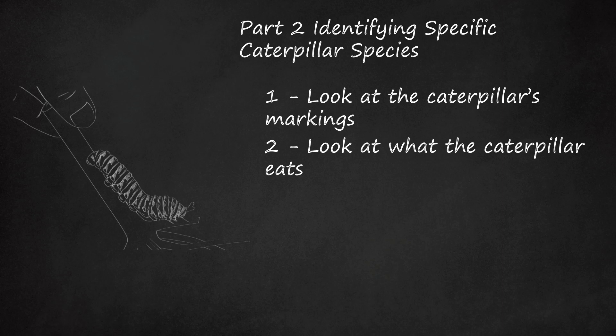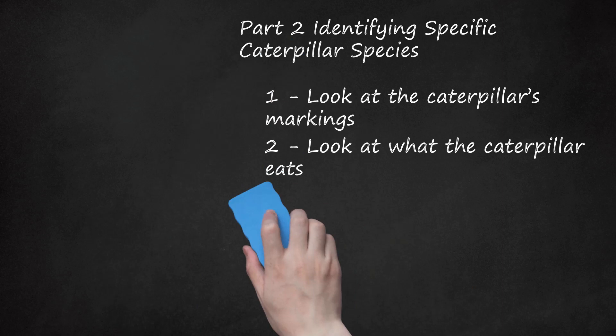Gypsy Moth Caterpillars have fuzzy black bodies with red and blue spots running down the centers of their backs. They feed primarily on the leaves of oaks and other hardwoods, but may sometimes feed on sugar maple leaves. Tomato Hornworms are pale green caterpillars with white and green markings and a protrusion resembling a horn; they are found on the leaves and stems of tomato plants.